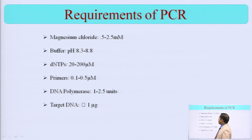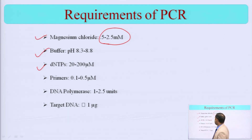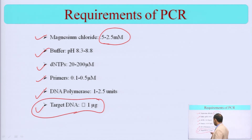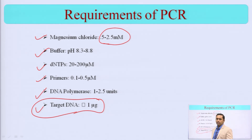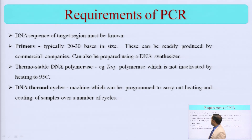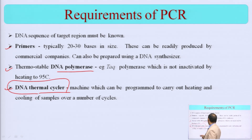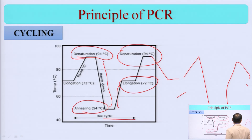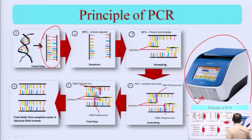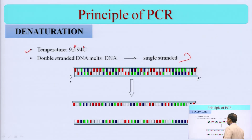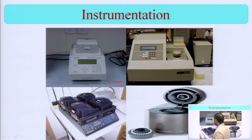What are the things required? You require magnesium chloride at appropriate concentration, buffer, dNTPs, primers, DNA polymerase, and the target DNA — what you are trying to molecularly photocopy, trying to increase its number. I have already mentioned: primer, thermostable DNA polymerase, and DNA thermocycler. The DNA thermocycler is this machine — it is called a DNA thermocycler, and there are various models from different companies.